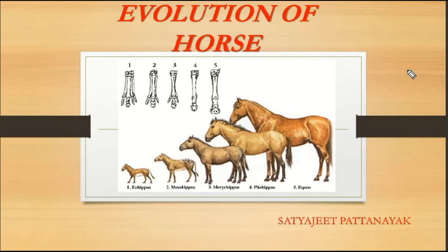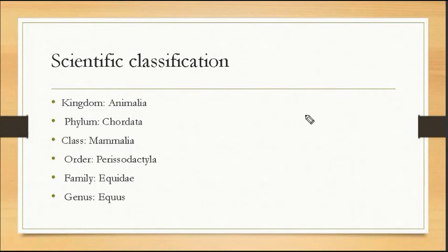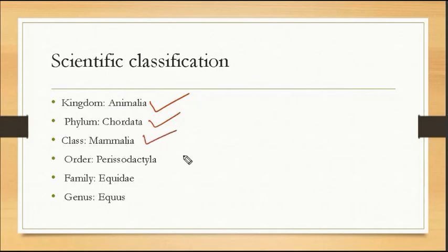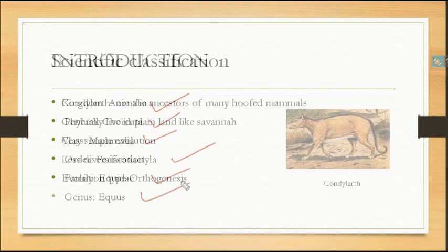We will now discuss the scientific classification. The kingdom is Animalia, the phylum is Chordata. The class is Mammalia, the order is Perissodactyla, the family is Equidae, and the genus is Equus.